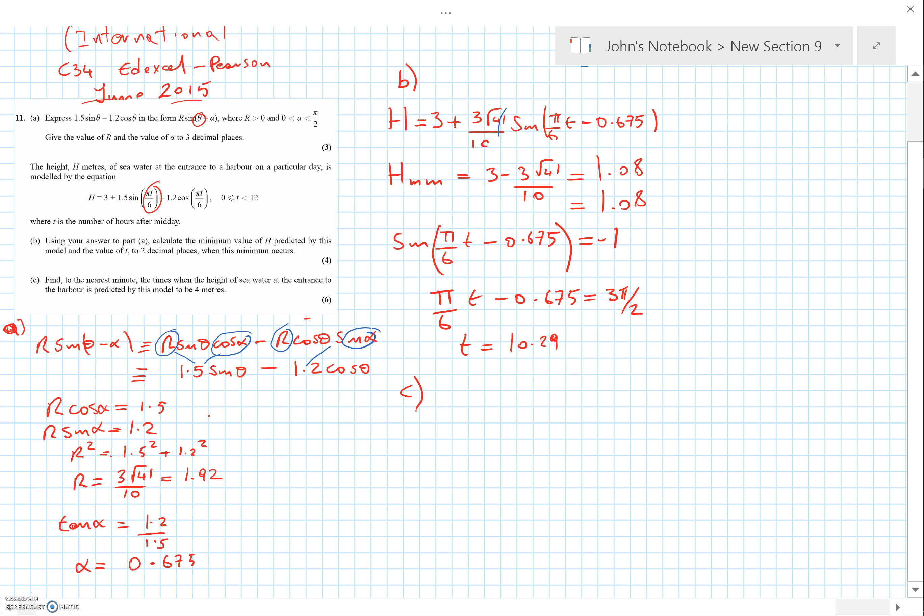Not too bad actually. Most people had a better stab at part C, which is a little bit more involved and longer. However, there is a slight wrinkle because it says the time is going to happen more than once. It's above four meters. We've got a function oscillating around a value of three. We want the times when it's going to be above four—it's going to happen twice.